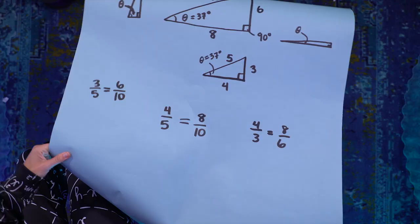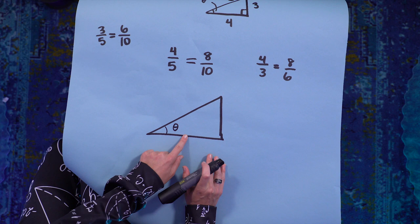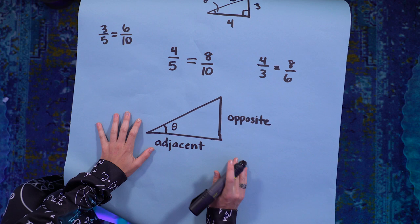sine, cosine, and tangent. But before I spoil more than the names, let's label the sides of the triangle. Let's call this side adjacent to the angle theta, the adjacent side. The side that's opposite the angle is the opposite side. And the long side of the triangle is the hypotenuse.